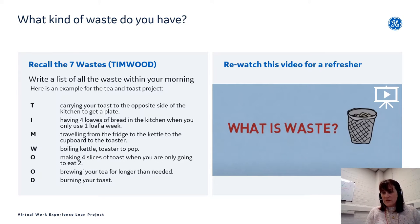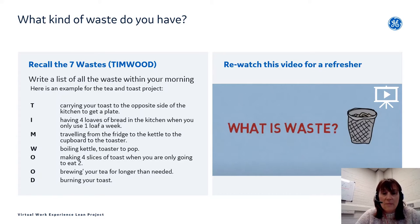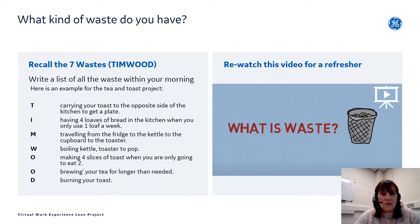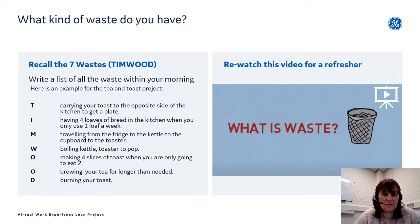Once you've done your current state map, start looking at what is creating the waste. Is it waiting time, travel time, or something going wrong? I've given some examples from my project — making a cup of tea and toast — split into TIM WOOD categories. For Transportation, the waste in my project is carrying my toast from the toaster across the kitchen to get a plate. That's travel time and transportation of my toast.